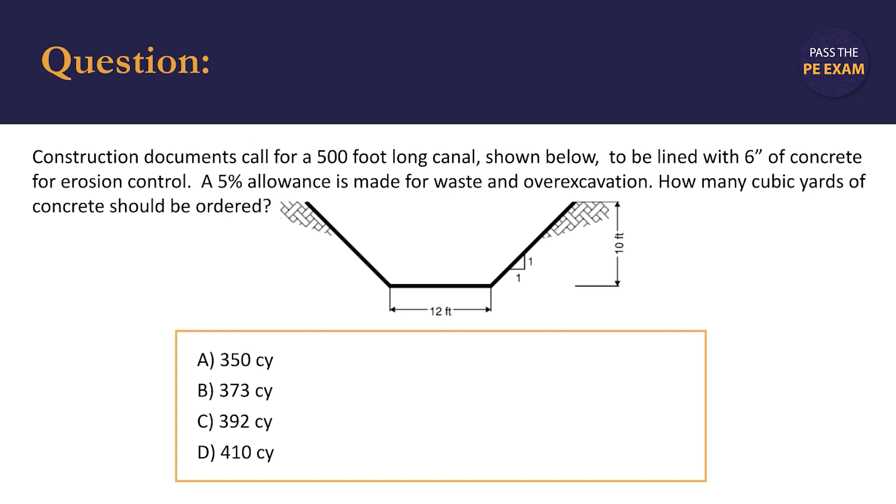We're also told that a 5% allowance is made for waste and over-excavation, and then we're asked how many cubic yards of concrete the field engineer should order. We're given the options of A: 350 cubic yards, B: 373 cubic yards, C: 392 cubic yards, and D: 410 cubic yards.